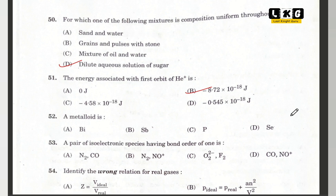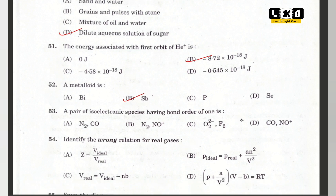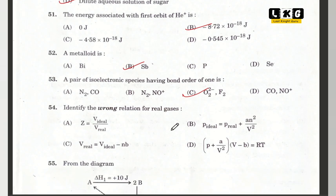Question number 52: a metalloid — option B is correct. Question number 53: a pair of isoelectronic species having bond order of one — option C is correct. This is also a first year chapter topic. Question number 54: identify the wrong relation for real gases — option C is correct.